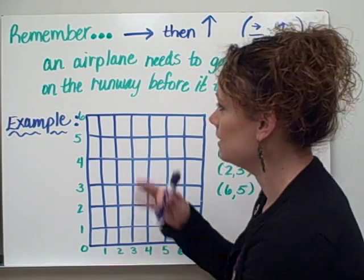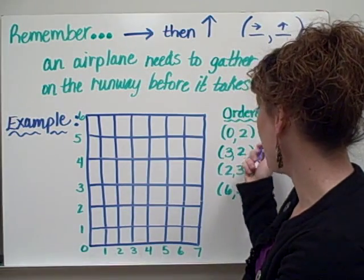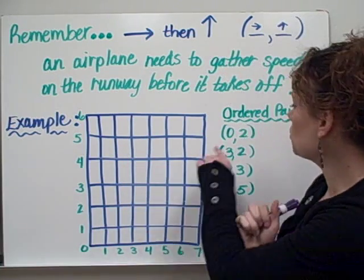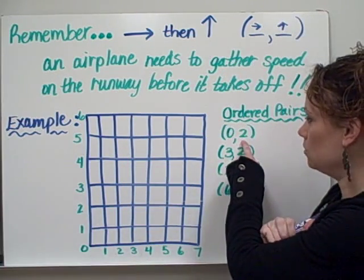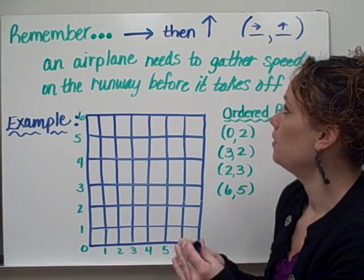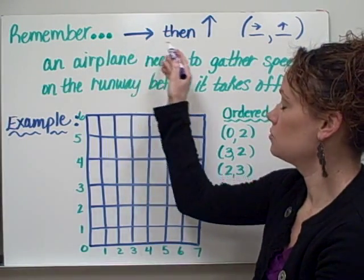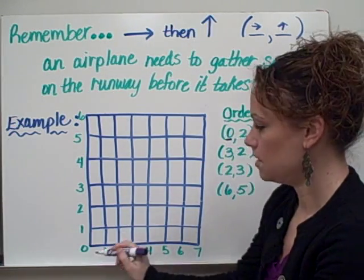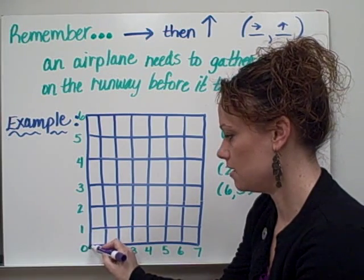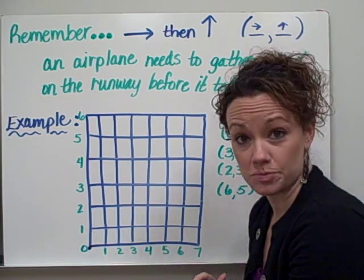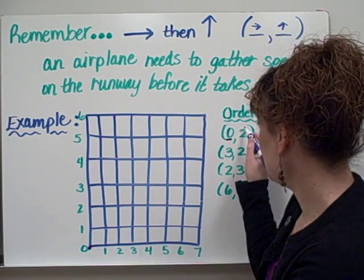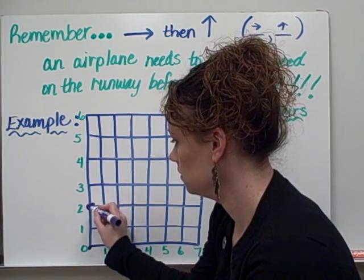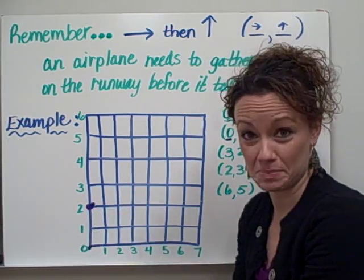So using this as our example, let's try to graph these ordered pairs on our grid system. Our first coordinate pair is 0, 2. So using our airplane example of going horizontally and then vertically, my first number is 0, so I'm going to be right on this line here. I don't really have to go anywhere for this particular one. And then I go up 2, so 1, 2. So 0, 2 would look like this on my coordinate plane.